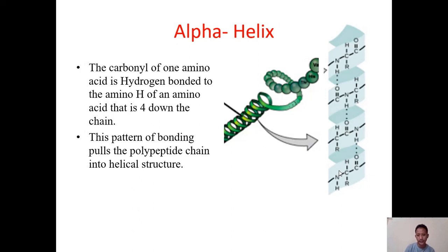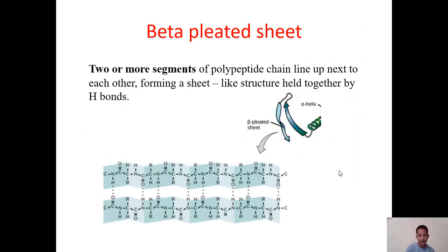In beta-pleated sheets, hydrogen bonds form between different parts of the chain. Two or more segments of the polypeptide chain line up next to each other, forming a sheet-like structure held together by hydrogen bonds. This structure is called the beta-pleated sheet and is another type of secondary structure.